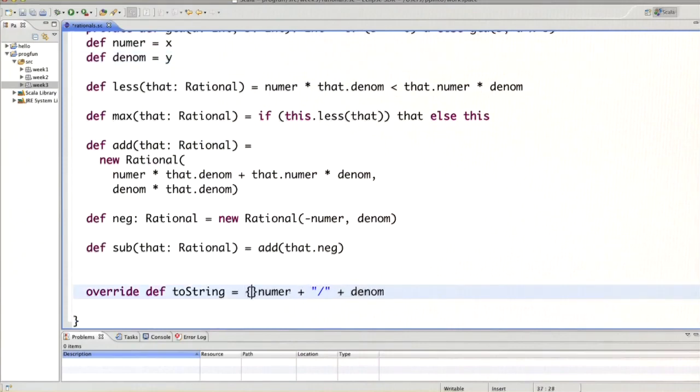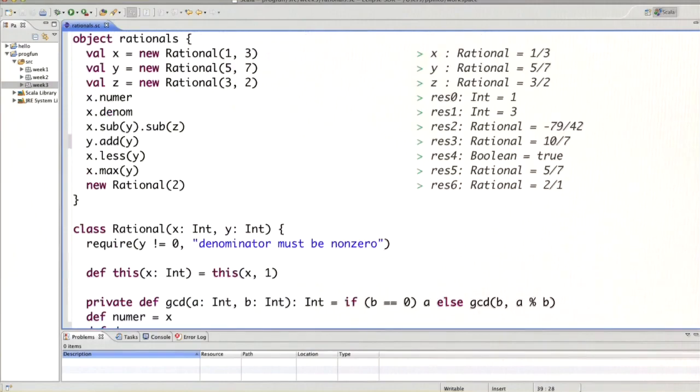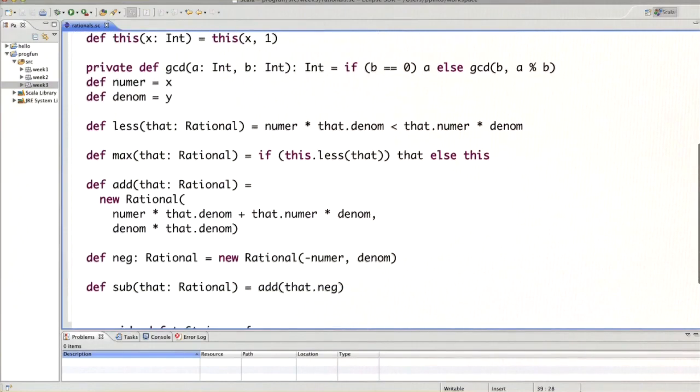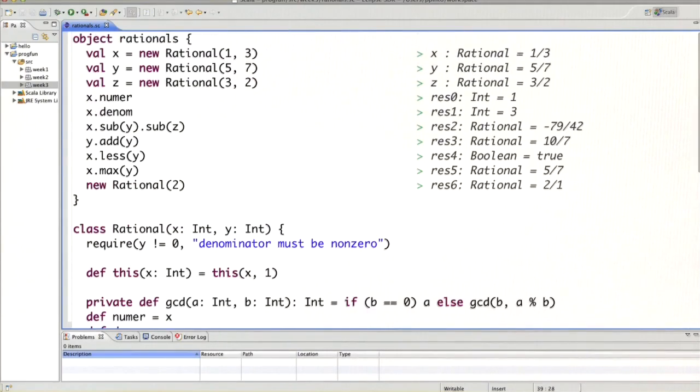So what we do instead is we go into the toString function and do something there. So what I propose is that we define our g equals gcd of numer and denom, and then we divide numer by g and denom by g. And that would do the trick. So now we keep the rational number unsimplified but before we print it we perform the simplification and in our case all the results really gave back the same value.